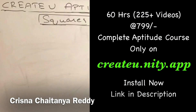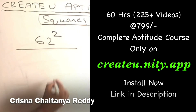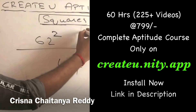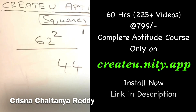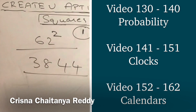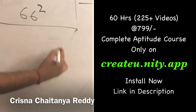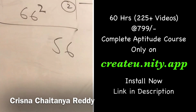For 62 squared - again close to 50, 12 close to 50. 12 squared is 144; I'll write 44 and carry the 1. It is 12 more than 50, so add to 25: 25 plus 12 is 37, plus 1 carry gives 38. Answer: 3844. For 66 squared: 16 more than 50, 16 squared is 256 - write 56, carry 2. 25 plus 16 is 41, plus 2 carry is 43. Answer: 4356.